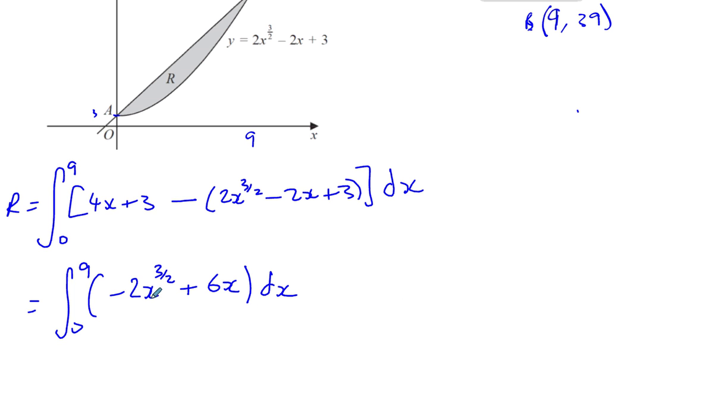Okay, so you've got minus 2x to the power of 3 over 2 plus 6x. You subtract these from each other. So we have to integrate this now between these limits. So let's go ahead and do that integration part.